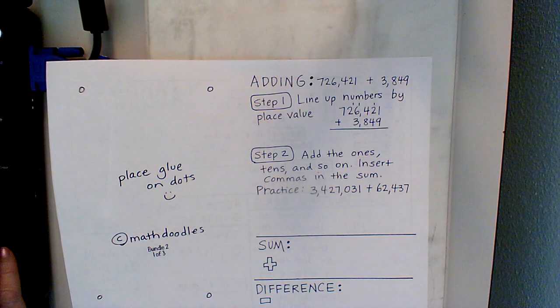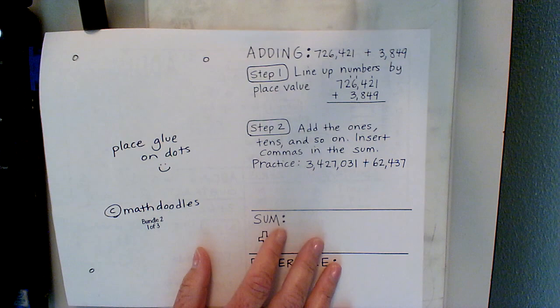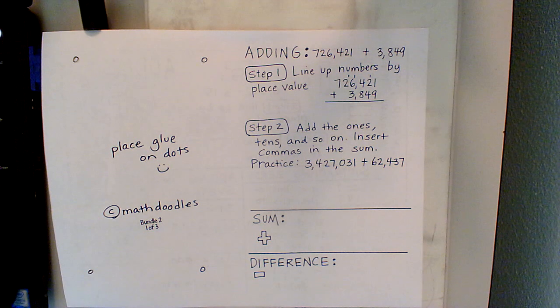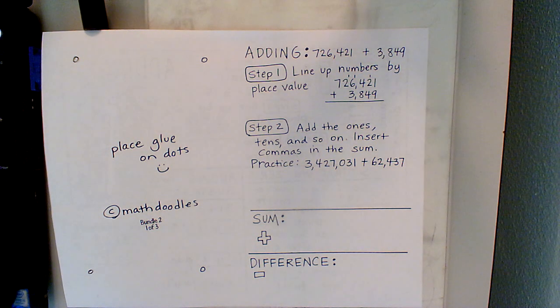Sorry about that. All right, so we have been given an equation: 726,421 plus 3,859. In our math books, they tend to give them to us side by side.